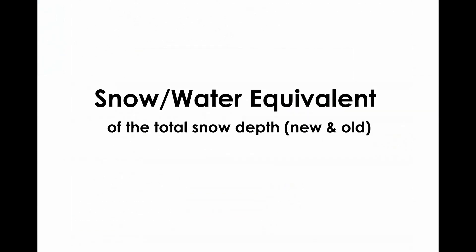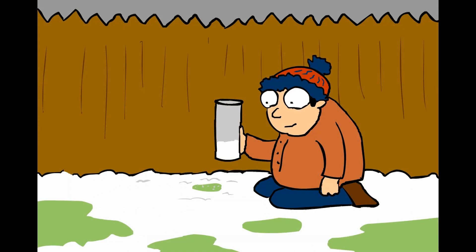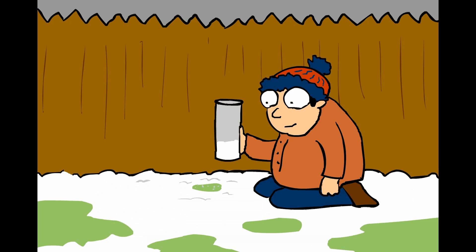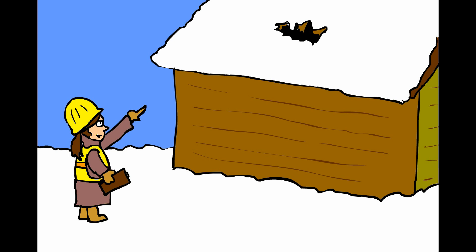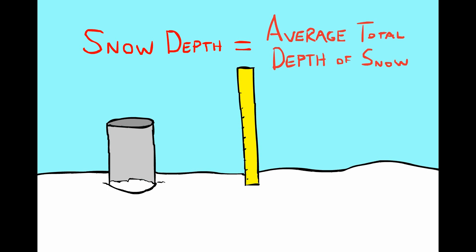Now we move on to measuring the liquid water equivalent of the total snow depth of both new and old snow. While this measurement is optional, typically taken once per week, it is very useful to hydrologists, river forecasters, and structural engineers. To get this measurement, take a snow core sample from the ground in a place where the snow depth is the same as your average measurement for the total depth of snow.